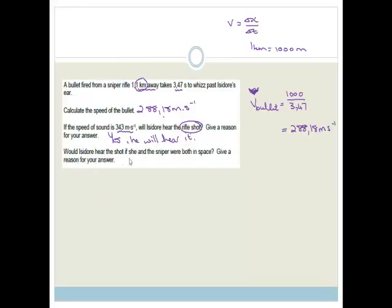Would Isidore hear the shot if he and the sniper were both in space? Give a reason for your answer. And the answer is no. And why not? Because sound doesn't travel in a vacuum. So therefore, even though he will see the shot, he will not hear the shot. All right. Let's do the next question.